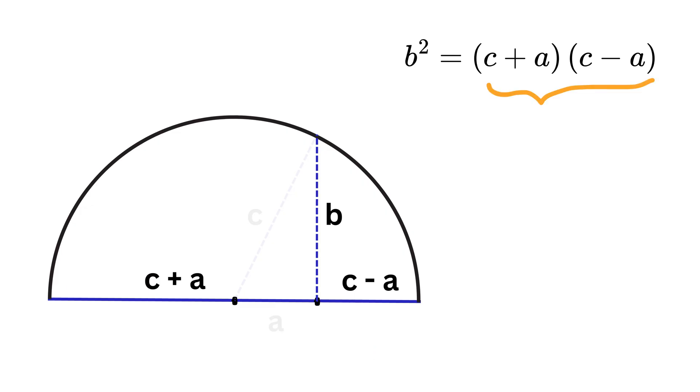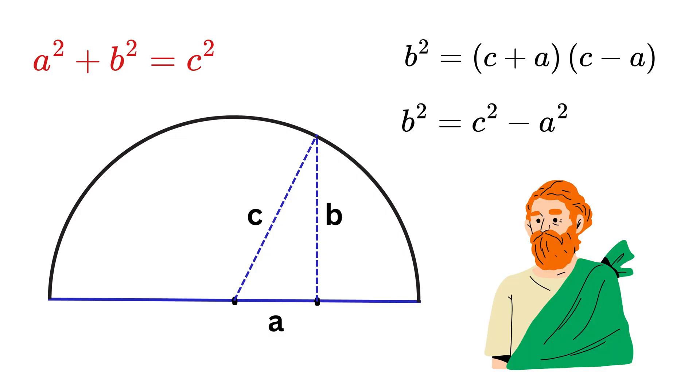In our AM-GM inequality proof we have just seen that this b squared is the same as this length or c plus a times this length or c minus a. But hey we know that when we expand it we get c squared minus a squared and this equals b squared. So a squared plus b squared equals c squared. Wow! It's Pythagoras again.